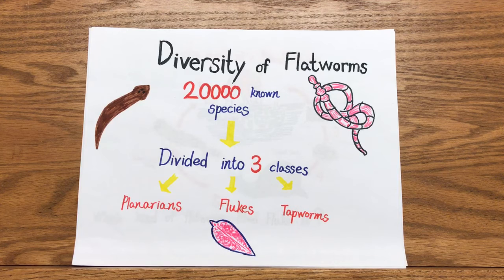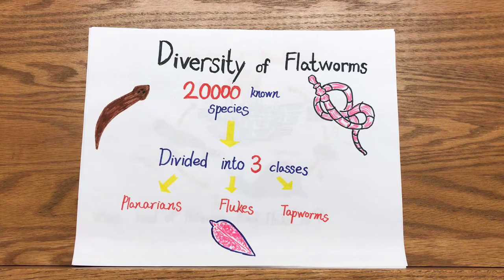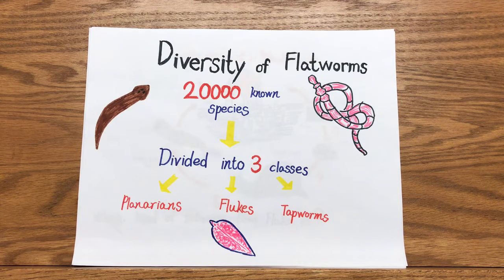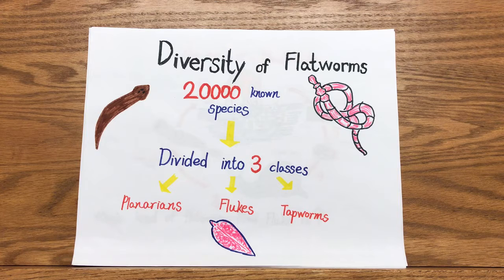There are 20,000 known species of flatworms that we've discovered so far, which are divided into three classes. The planarians, which are mostly free-living and marine but some live in moist terrestrial environments. Flukes, which are parasites that are heterotrophs that absorb nutrients from the fluids of a living host and in the process harm the host. And then there are tapeworms, which are also parasitic.